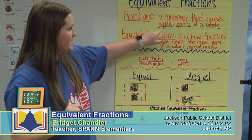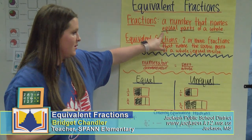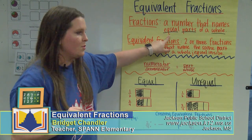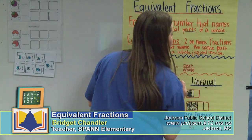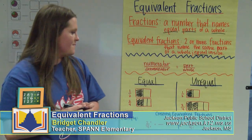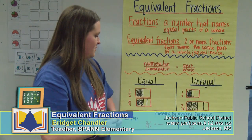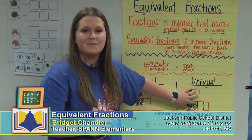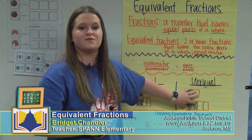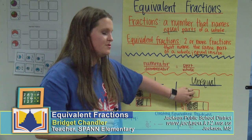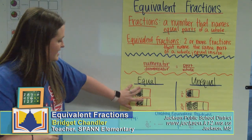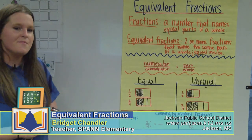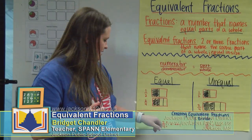The important part of these definitions is that equivalent fractions are equal in size. If you see shapes that are two different sizes, you automatically know you cannot make equivalent fractions from that. But if they are the same size, then you are good to go.